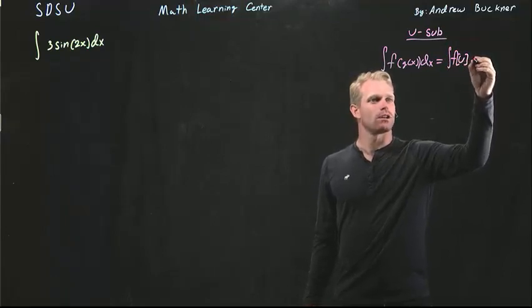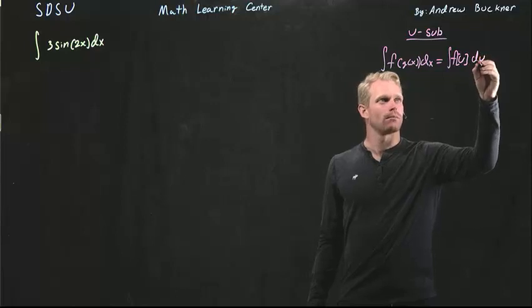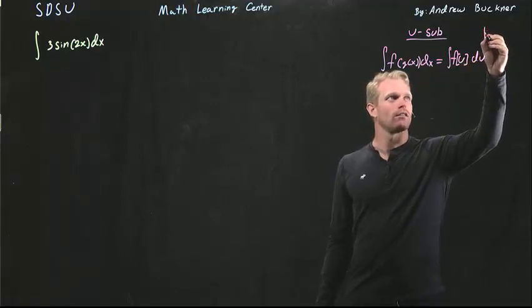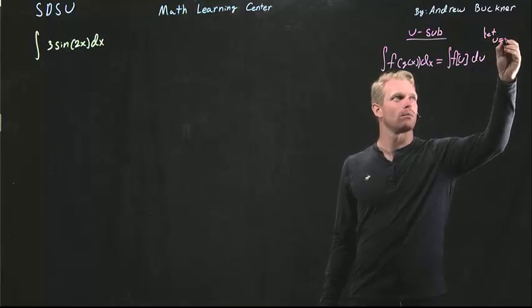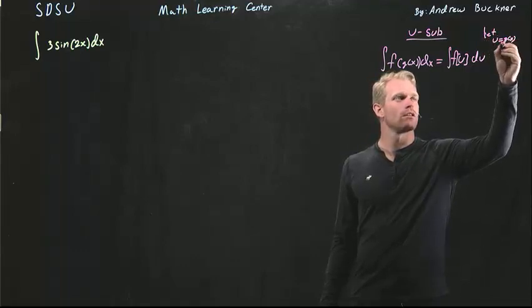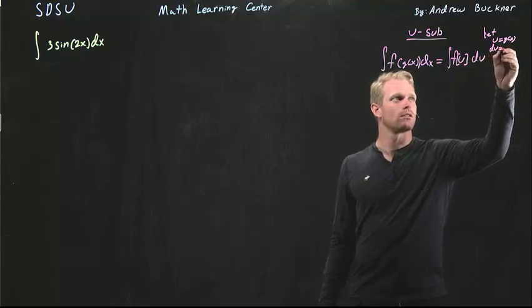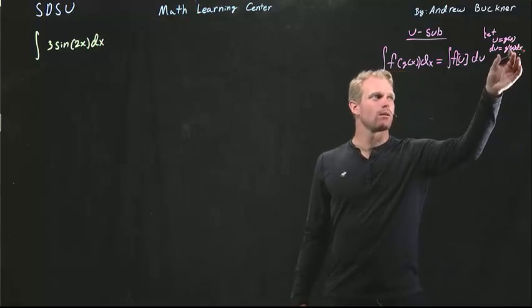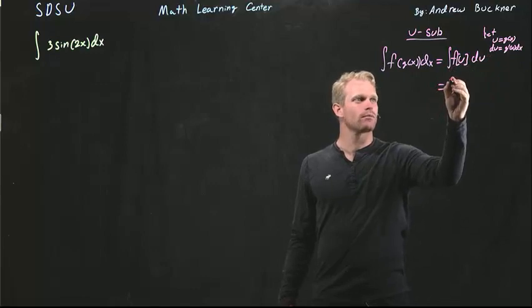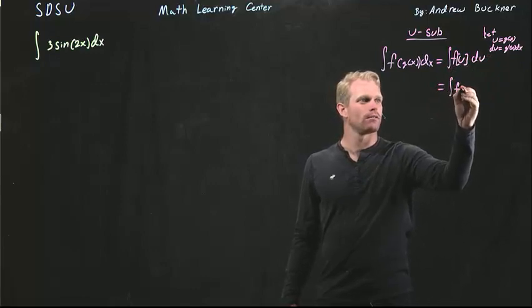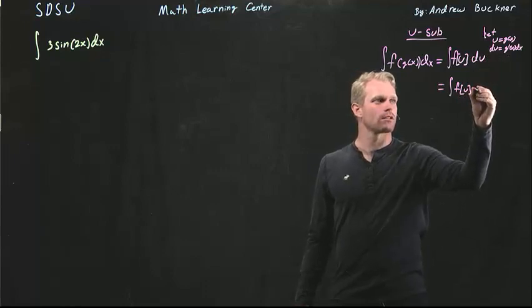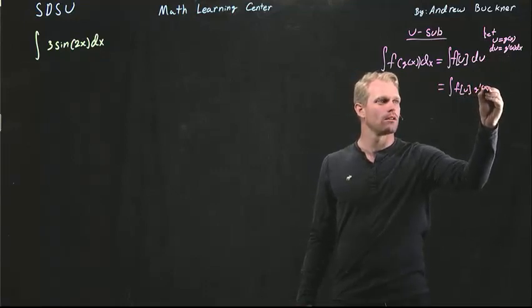When I do a change of variables, I'm then going to get my du. So what I have over here, I'm going to let my u equal my g of x. Then my du is going to equal my g prime of x dx. And that's what I'm going to be plugging in here. So now I'm going to have my f of u, and then for my du, I'm going to have my g prime of x dx.